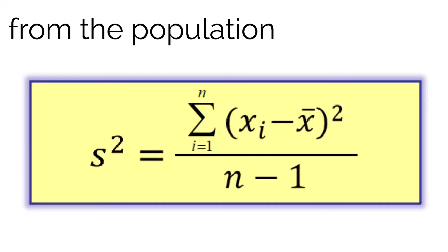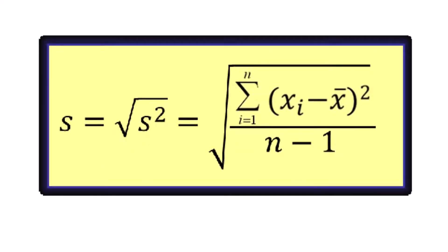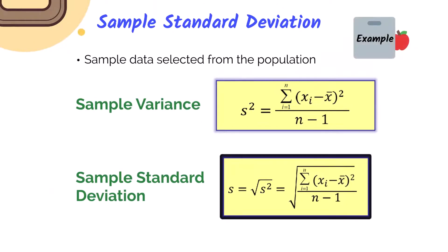The formula is similar as the population variance where we're summing up the square differences. In this case, we are dividing by small n or sample size minus 1. Then the sample standard deviation is the square root of the sample variance, just like we did with the population standard deviation. So let's wrap this up with another example for sample variance and standard deviation.